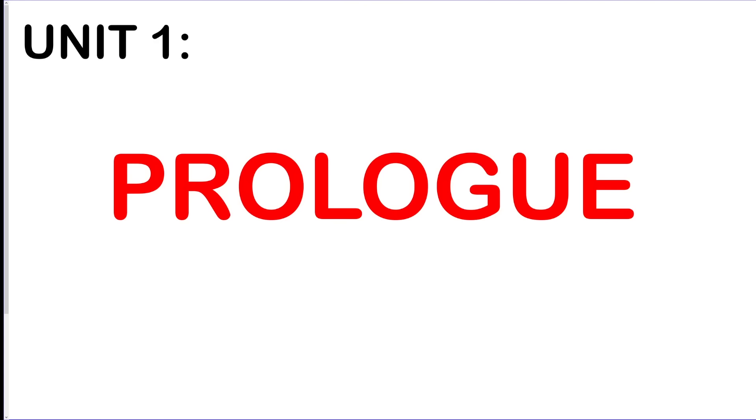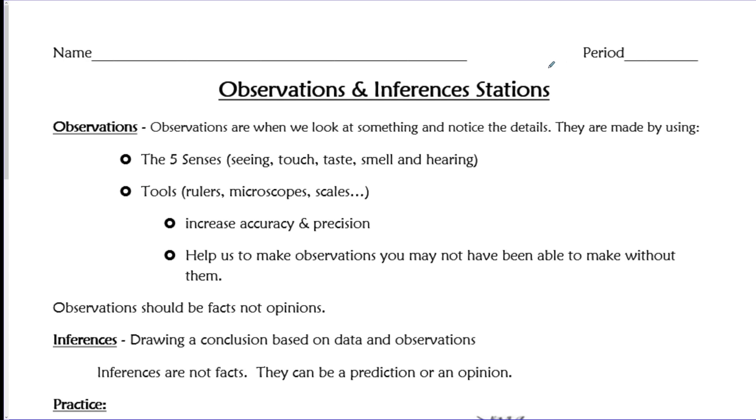All right, here we go. We're going to start with unit one, which is going to be the prologue unit, just highlighting some important stuff to know. An observation is what we look for and notice the details about something specific. We're going to use our five senses to do it: see, touch, taste, smell, and hear it. An inference is drawing a conclusion based on the observation, so it's like sort of a prediction.